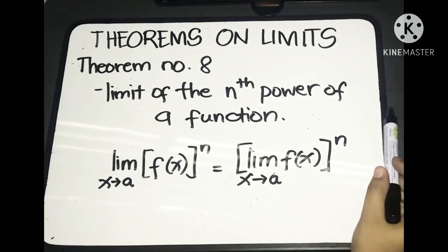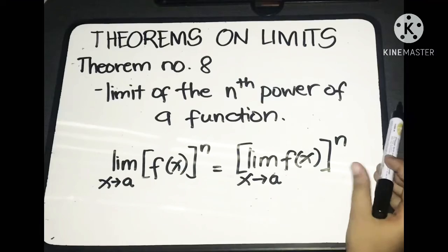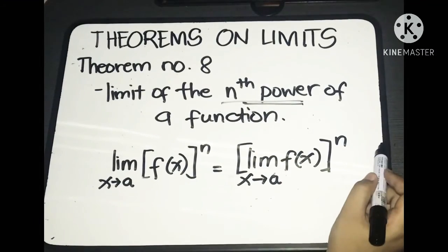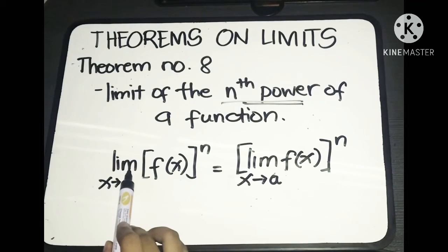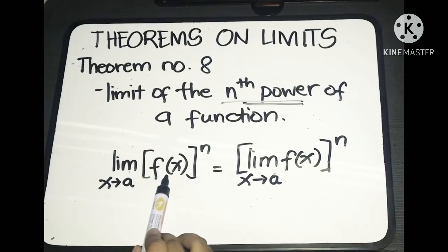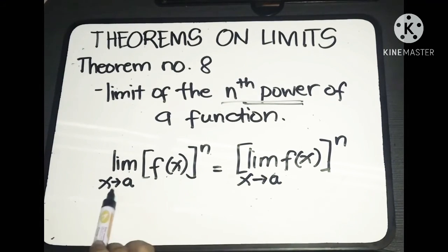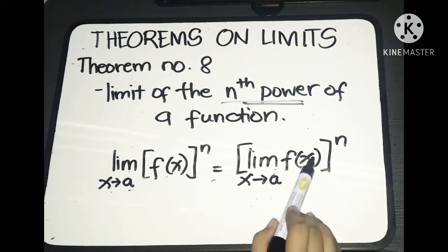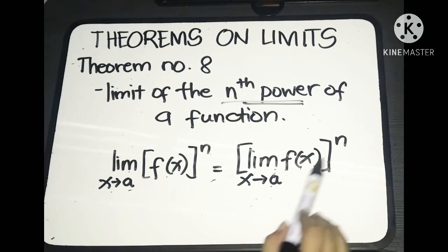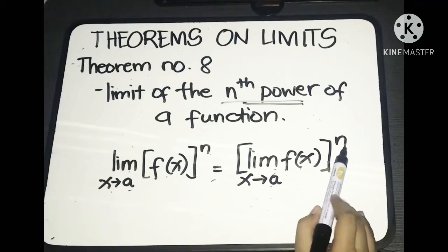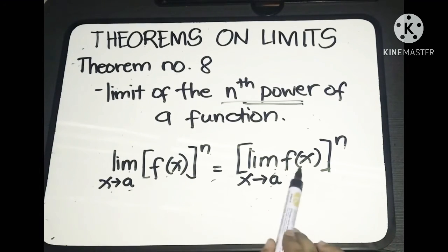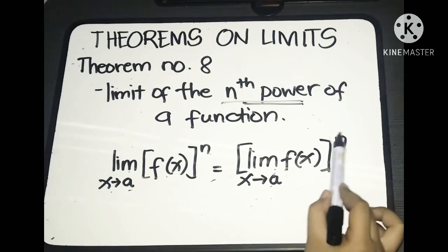For the last theorem, Theorem 8: the limit of the nth power of a function. This is written as the limit of f(x) raised to n as x approaches a, equal to the limit of f(x) as x approaches a, quantity raised to n. We're just going to raise the whole limit to the given exponent.